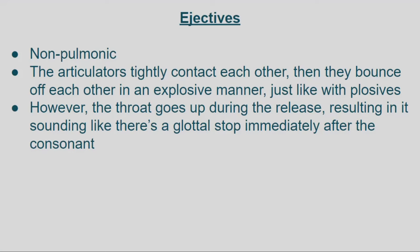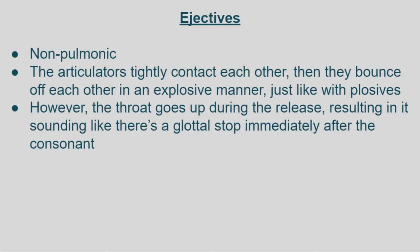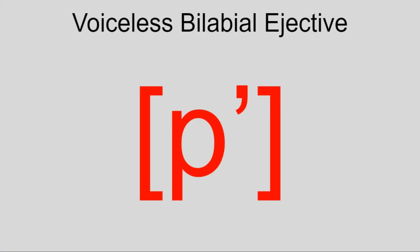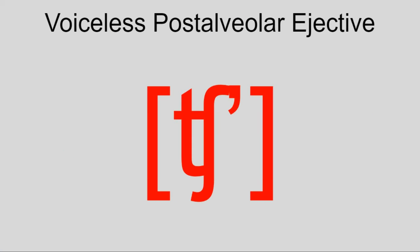Next up are ejectives, which are kind of the opposite of implosives in that the glottis goes upwards when releasing the sound. I've actually studied a language that uses ejectives — Amharic — so I can say that some of them are p', t', ts', tʃ', and c'.